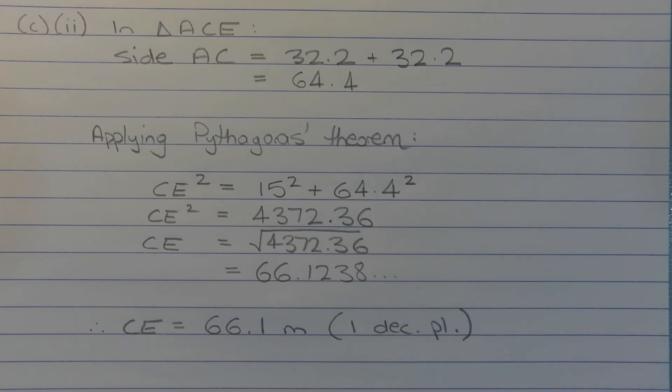Now we want the length of CE, not CE squared, so we need to take the square root of this value here. So CE is equal to the square root of 4,372.36, which equals 66.1238 and so on. Therefore CE is equal to 66.1 meters, correct to one decimal place.